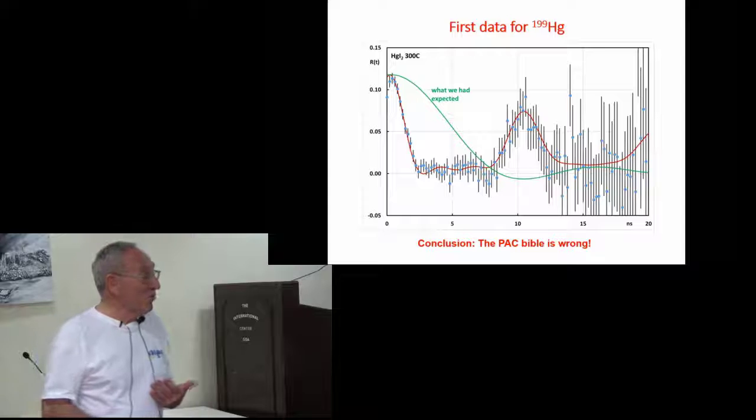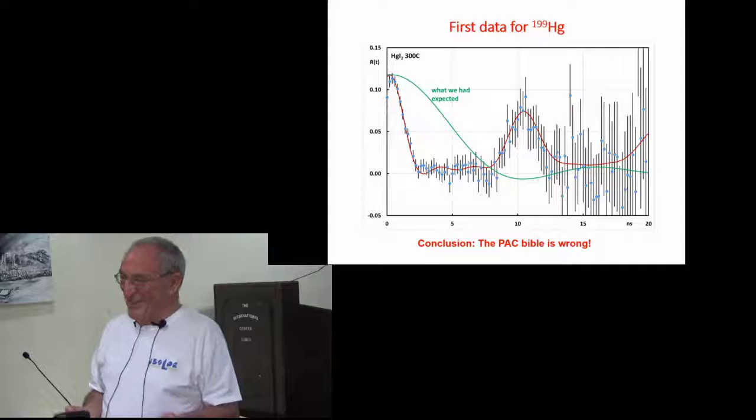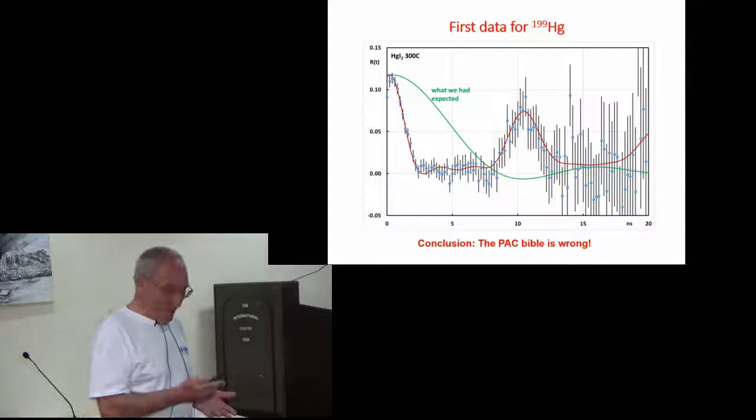Simply, the Bible is wrong. There is a factor of four misprint in the PAC Bible, so we had to do the quantum mechanics properly.